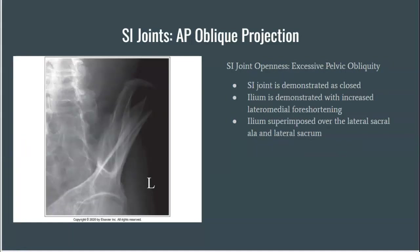In an image with excessive pelvic obliquity — where the pelvis is rotated more than 25 to 30 degrees with the IR — the resulting AP oblique SI joint projection will demonstrate a closed SI joint, the ilium with increased lateral-medial foreshortening, and the ilium will superimpose over the lateral sacral ala and lateral sacrum.